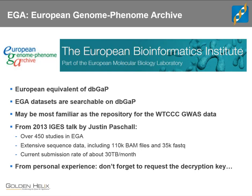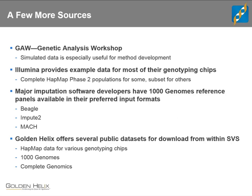Other sources: GAW is a useful place for simulated data, especially helpful for method development. Illumina provides example data for many of their genotyping chips. Some imputation programs have downloadable 1000 Genomes reference panels already in the right input formats — helpful for imputation but also as a quick way to get that data. Here at Golden Helix, through the SVS software interface, there's a download menu with a handful of curated datasets from HapMap, 1000 Genomes, and Complete Genomics that you can pull into your analysis.